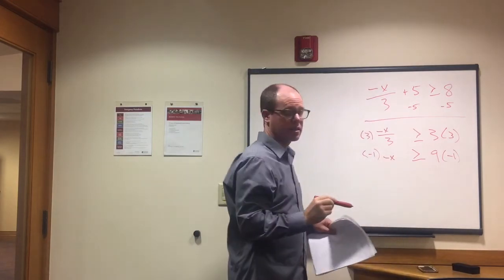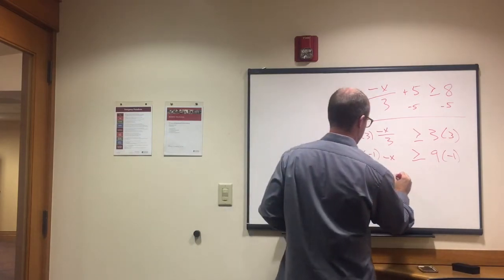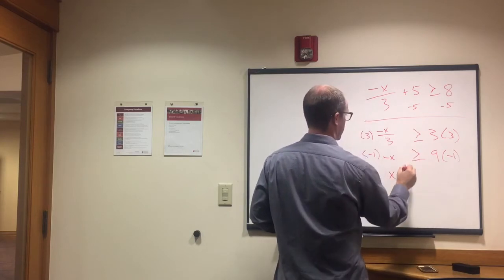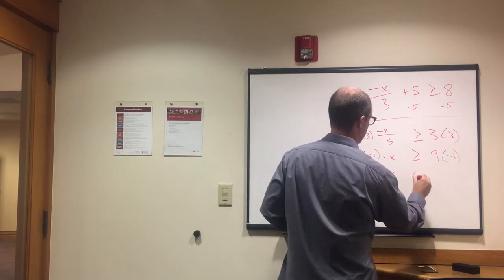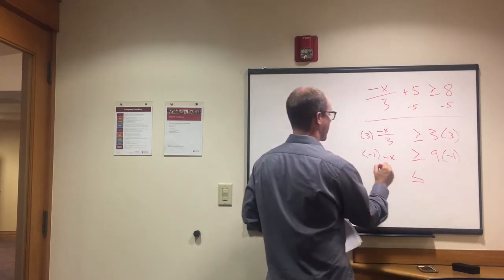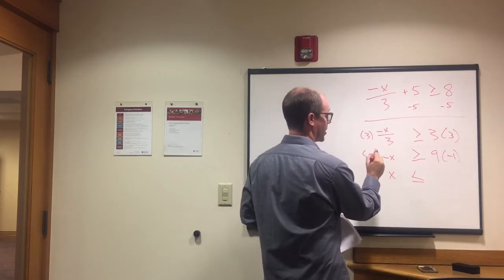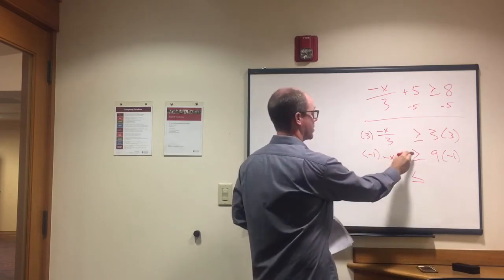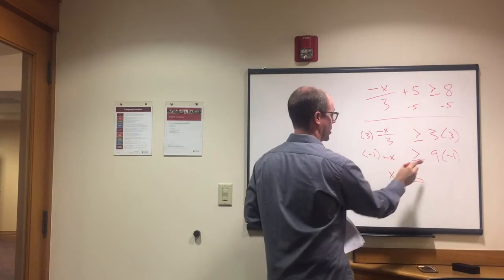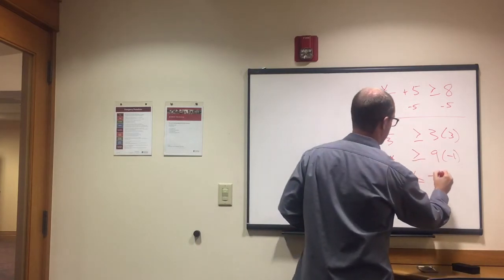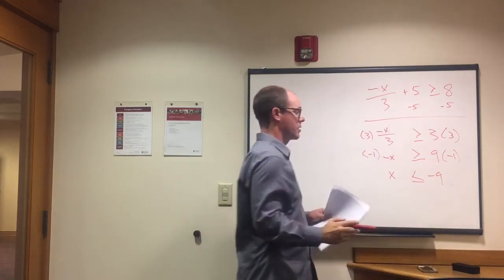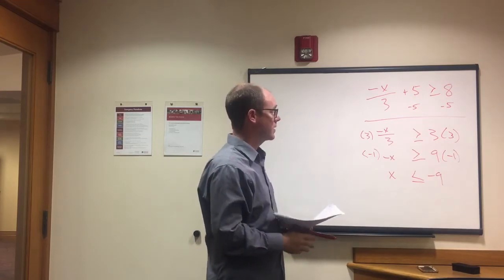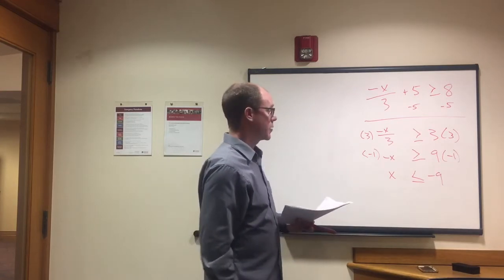So this -x now becomes x. This greater than or equal to now becomes less than or equal to, right? Because we multiply by a negative number, -1, this sign flips. 9 times -1 is -9. Okay. And that will be our answer. x ≤ -9. All right.